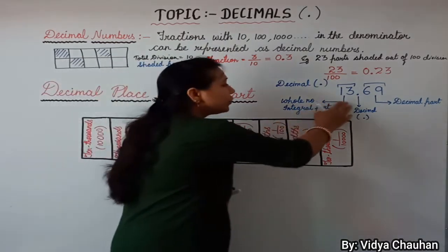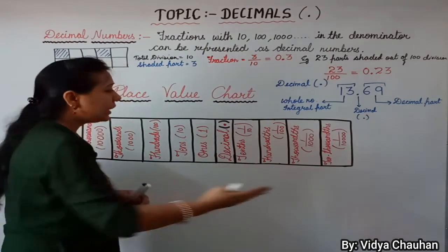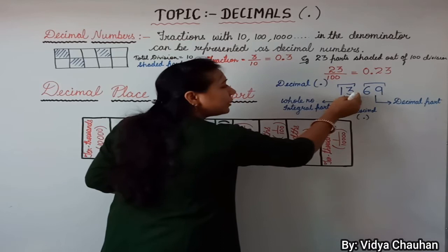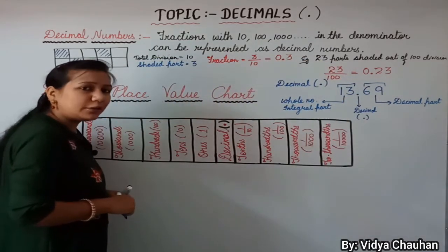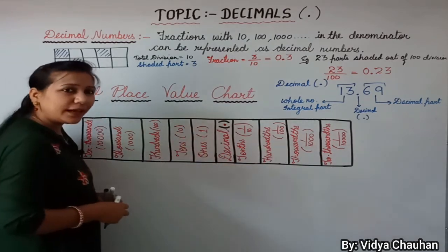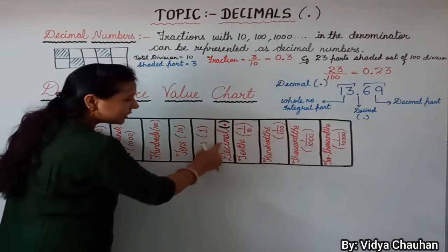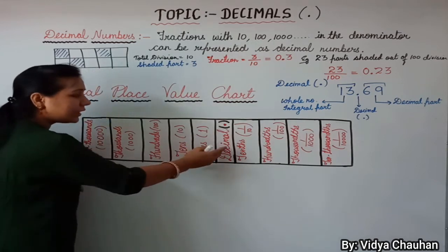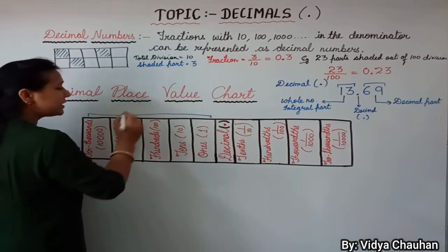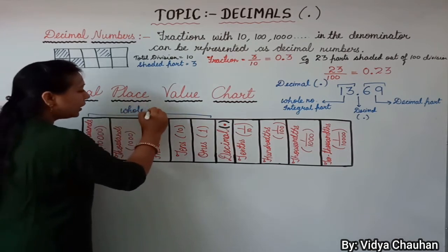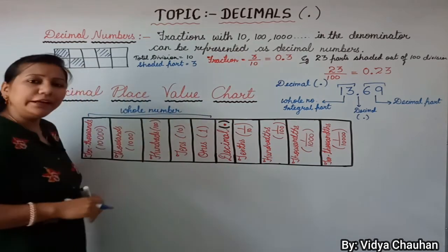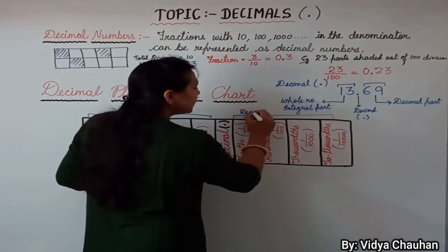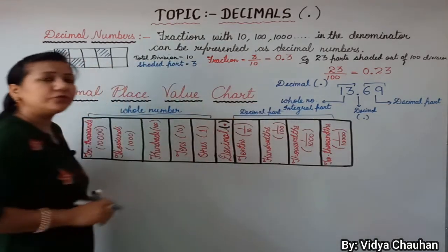Now that we understand the whole part and the decimal part, let's look at the decimal place value chart. Since the integral part is before the decimal and the decimal part is after, our place value chart is structured accordingly. The decimal is written in the center — values on the left are the whole number or integral part, and values on the right are the decimal part.